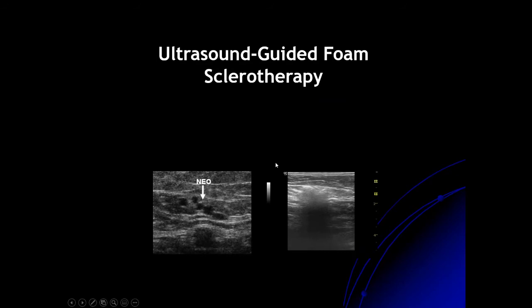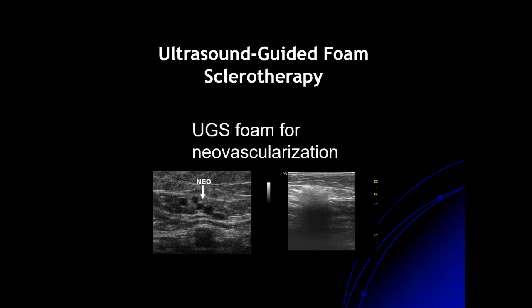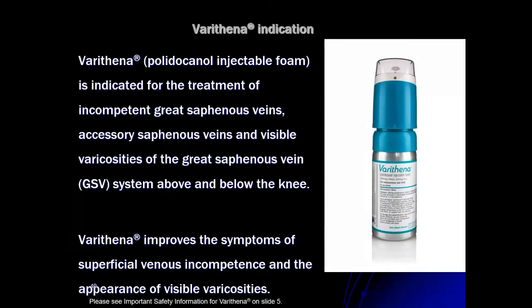Ultrasound-guided foam is excellent for neovascularity seen following mostly surgical extirpation of the great saphenous vein, and occasionally after thermal ablation. Injecting one of those neovascular veins causes it to spread throughout all connected veins — a great way to address the problem. In the US, there is a manufactured foam called Varithena, which is now reimbursed by insurance companies. It is very low nitrogen — less than 1% — a CO2/O2 combination with 1% polidocanol.